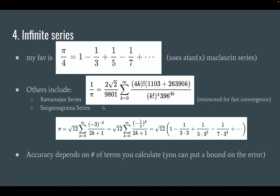So some other ones are this one, which I'm not going to read because it's a monstrosity, but it's really renowned for its fast convergence. So if you calculate a couple of terms of this big guy, you'll get pretty close to pi already. And there's other series like this one here. And your accuracy depends on how many terms you calculate and which series you use. You can also sometimes put a bound on your error, given that you know how many terms you calculated.